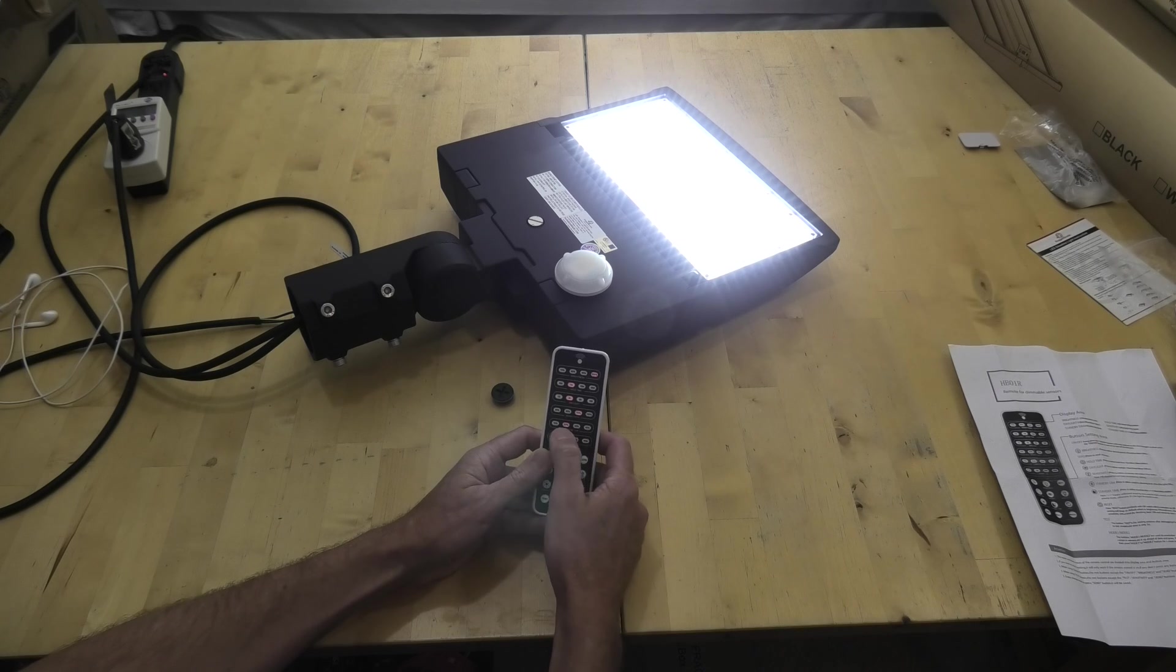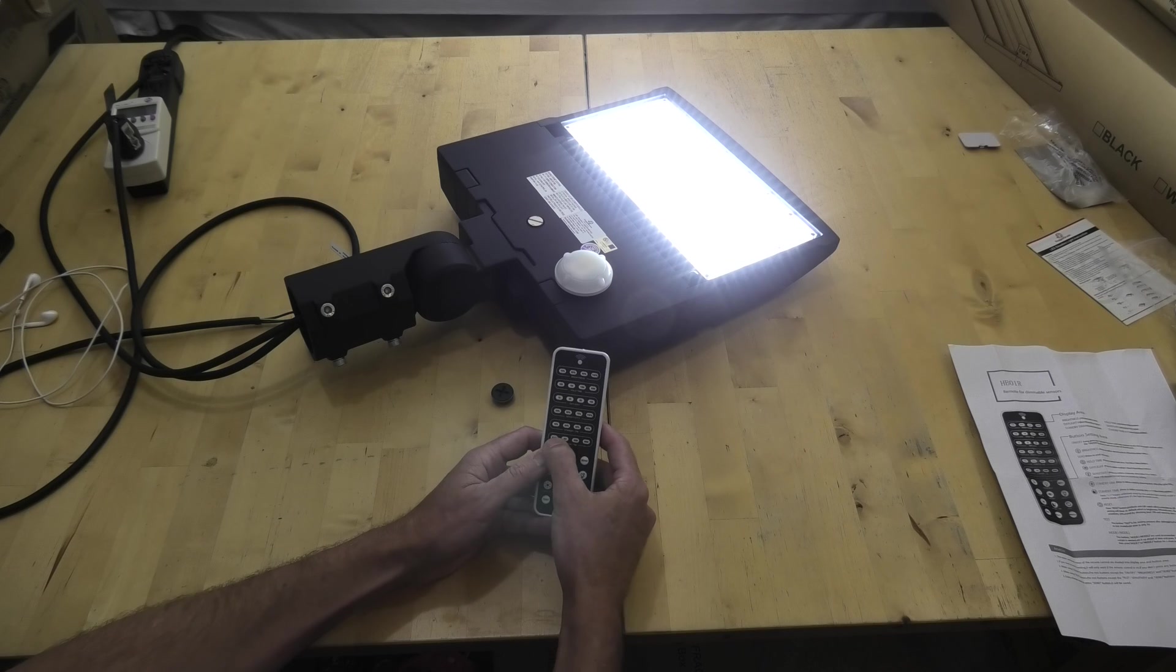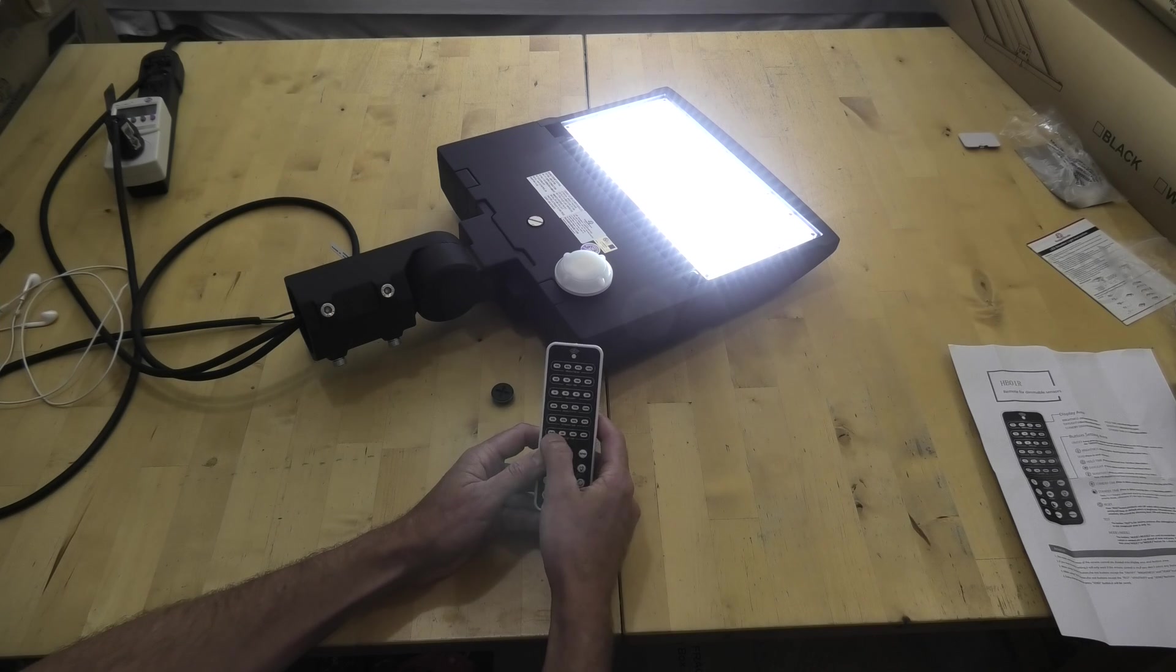And then standby dimming is how long it's going to stay at the dimming level or the dimming percentage of light, that's 20%. And then standby time, you can leave it infinite, and that would be the standard if you just wanted to always stay at a dim setting during the night.